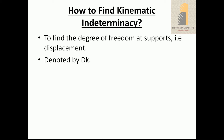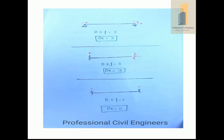Now, how to find kinematic indeterminacy — to find the degree of freedom at a support, which is displacement, denoted by DK. For a simply supported beam, at the hinge support there is one rotation, and at the roller there are two displacements — one translation and one rotation.